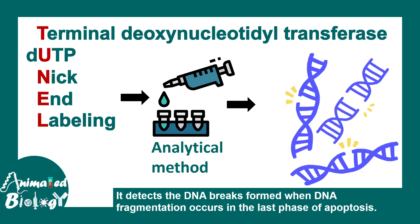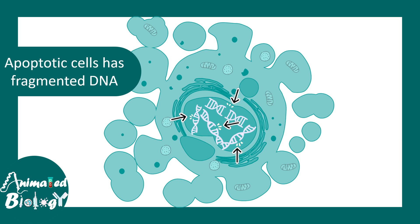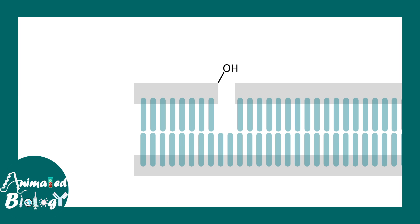So if a cell is undergoing apoptosis, there would be double-stranded as well as single-stranded DNA breaks. Let us understand in this context how the TUNEL assay works.